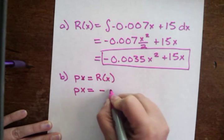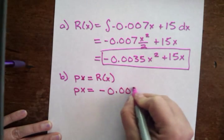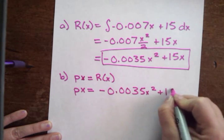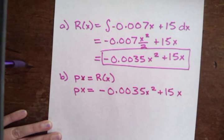Well, we have R(x). That's negative 0.0035x squared plus 15x.